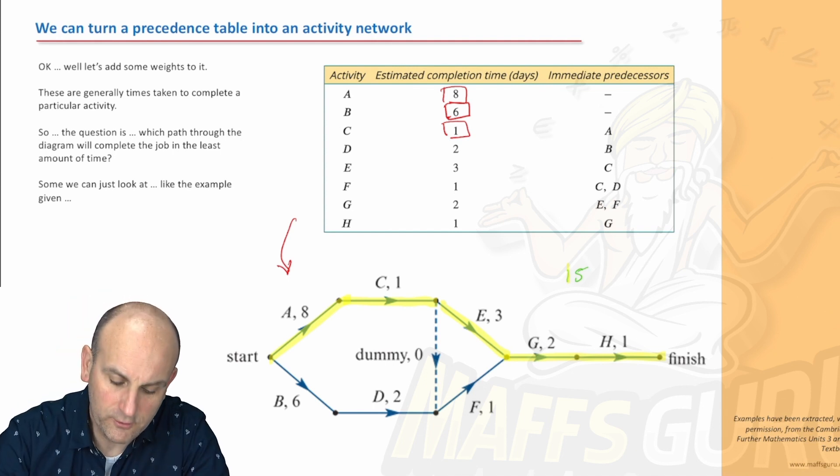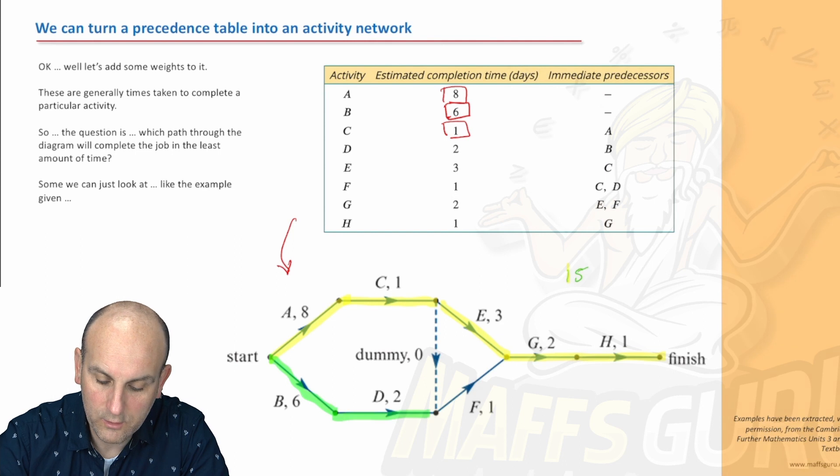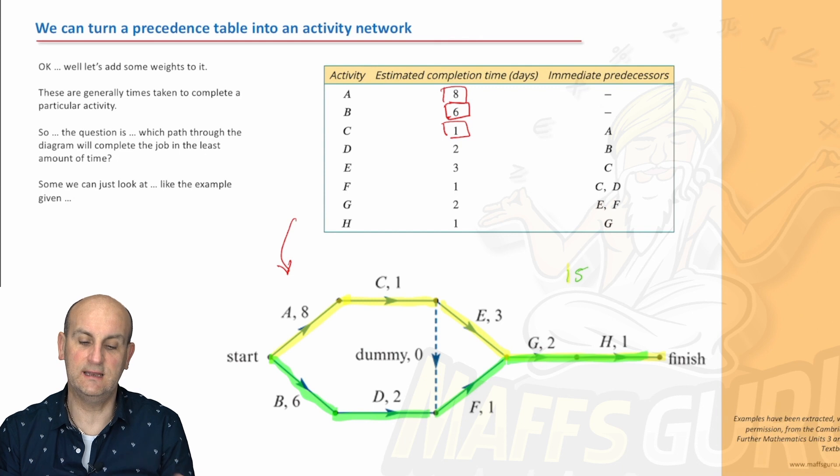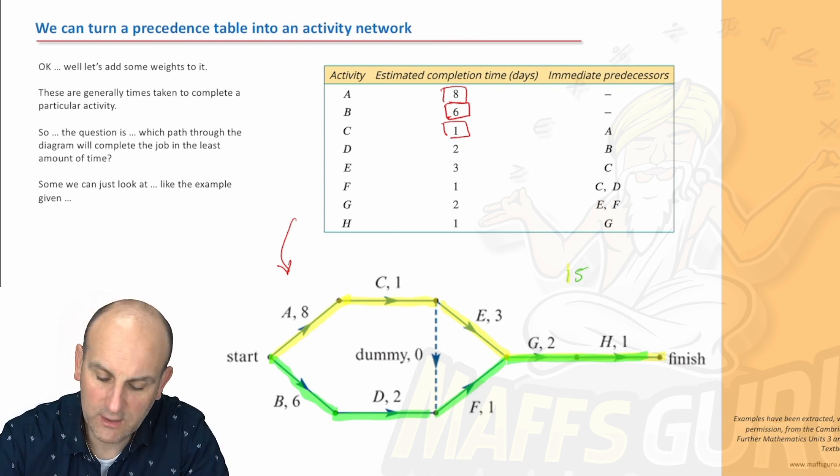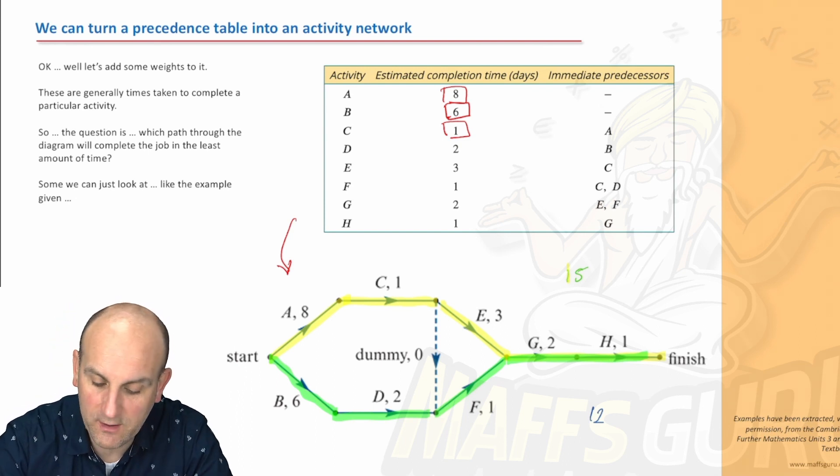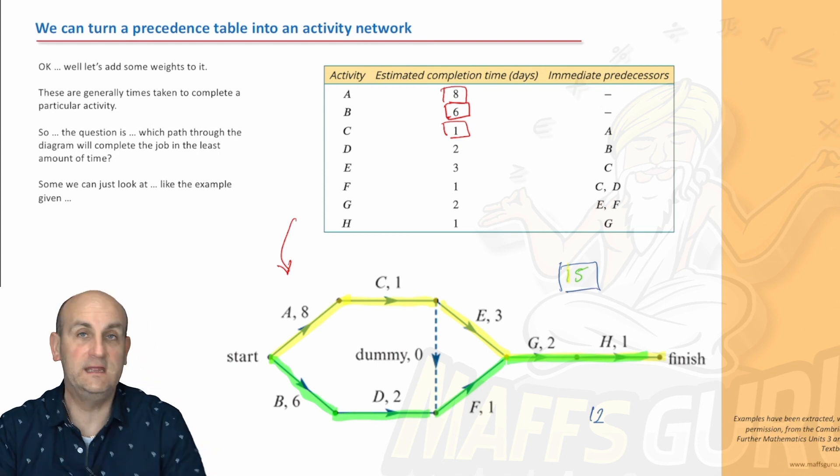Because we could equally go through here. And in that situation, we would have 6, 7, 8, 9, 10, 11, 12. So going that way would be 12 days. Oh, well, we'll do that then, yes? No. It just actually means that we could complete it in 12, but not. Because this yellow path is still going to take 15 days to do.